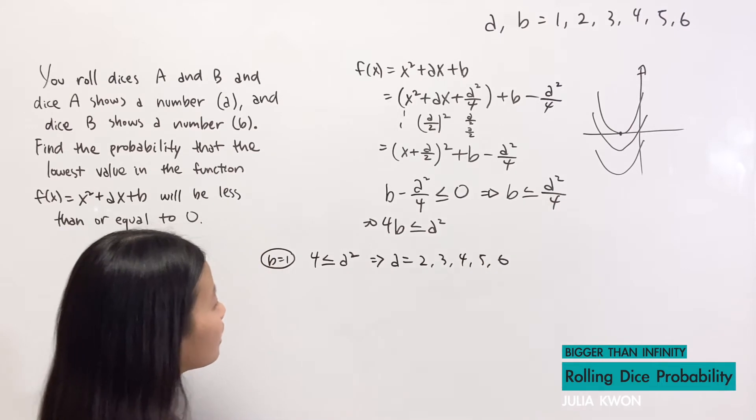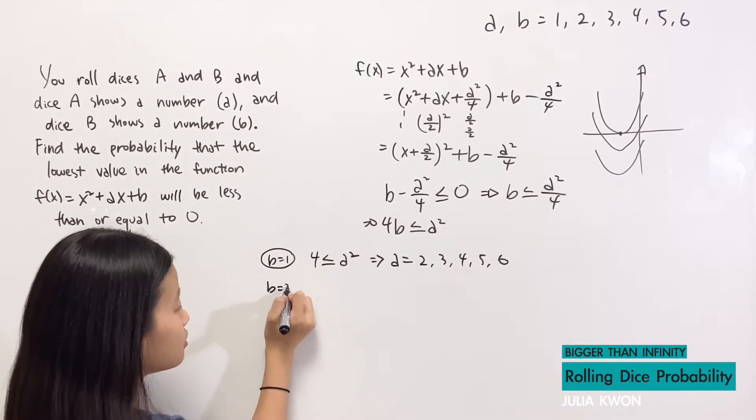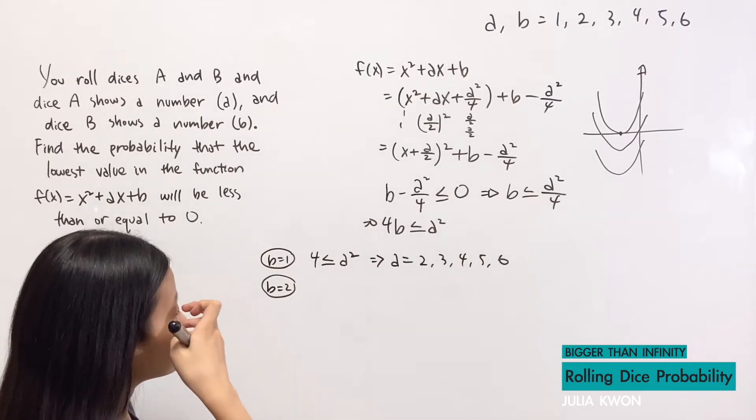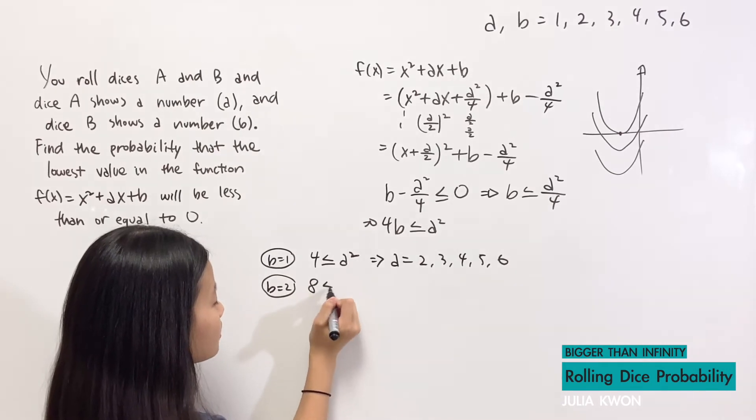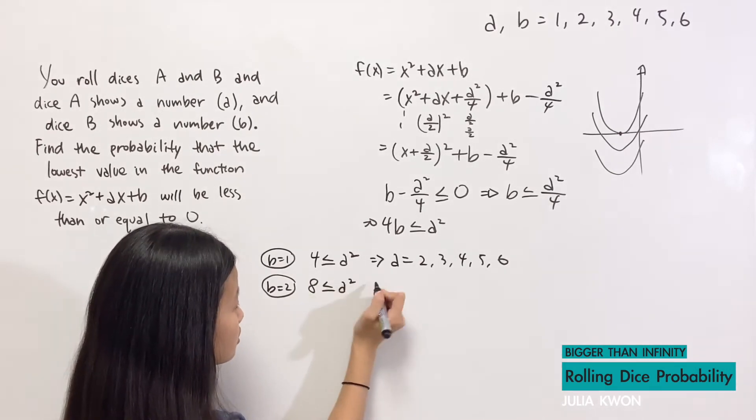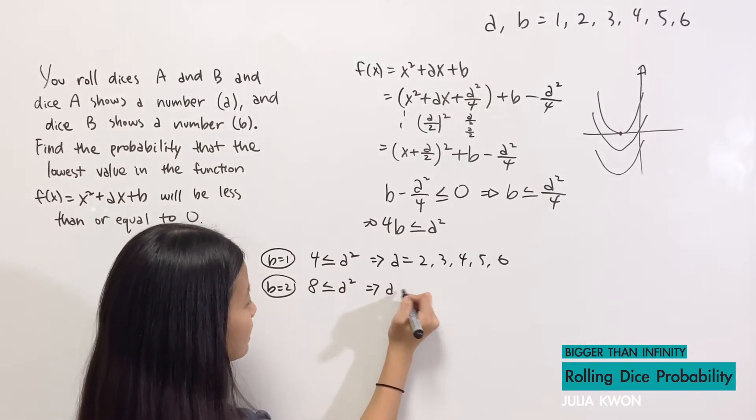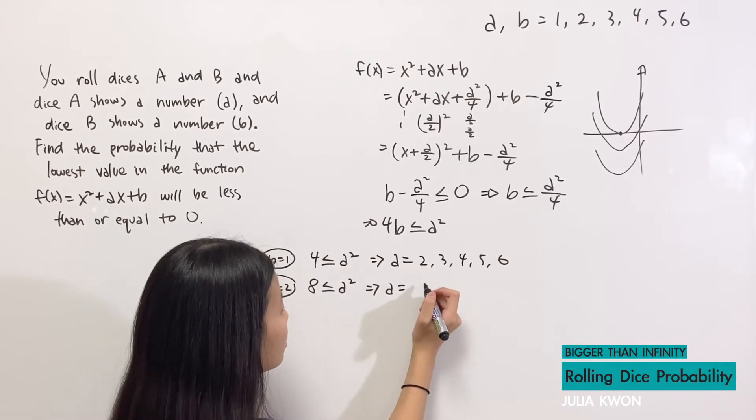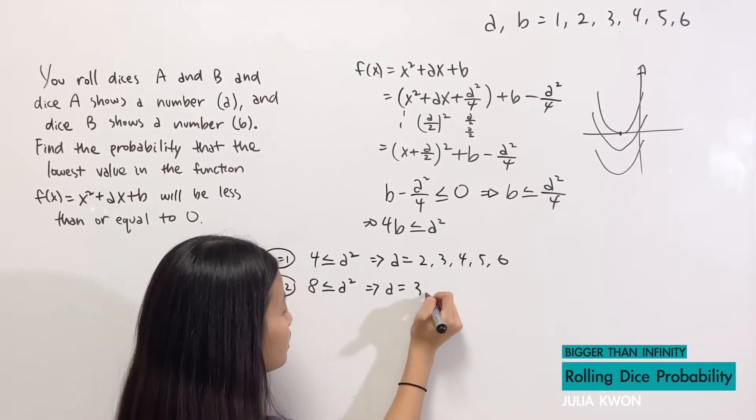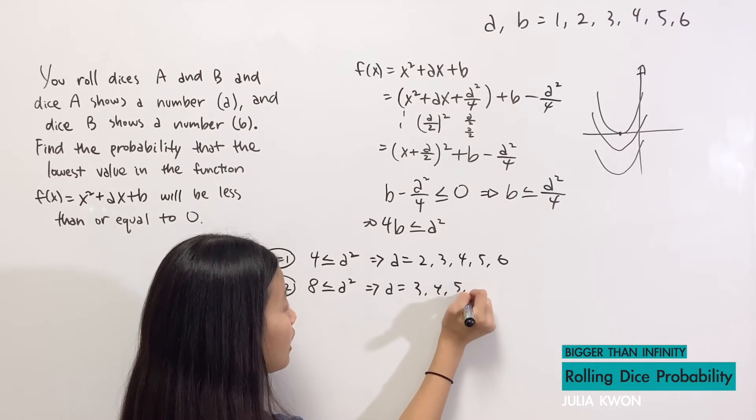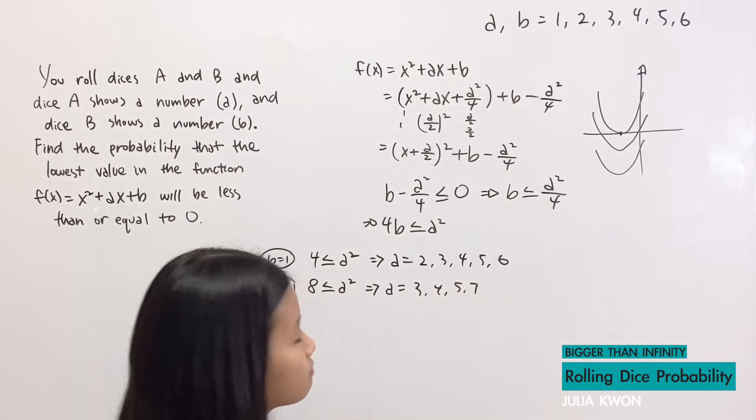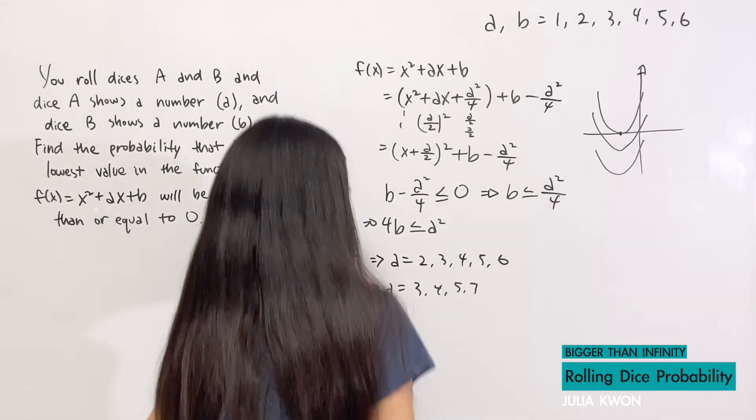If b equals 2, then 8 will have to be less than or equal to a², which means that a can equal 3, 4, 5, and 6.